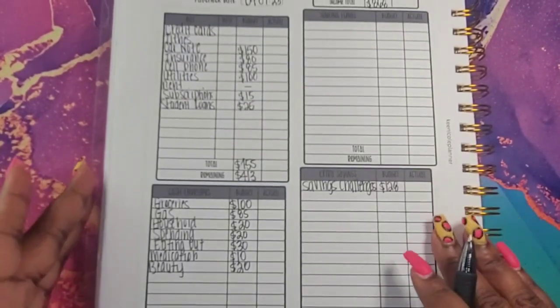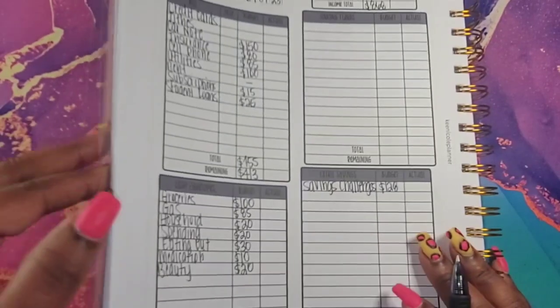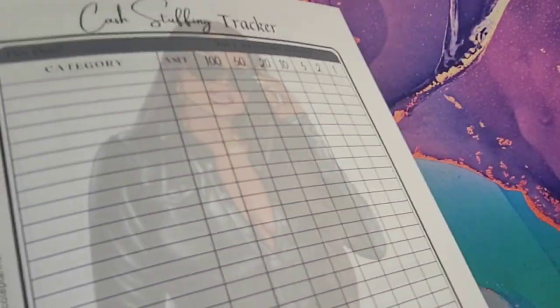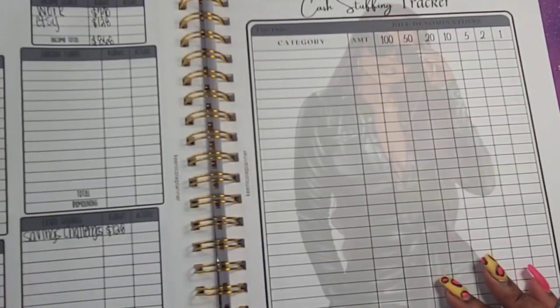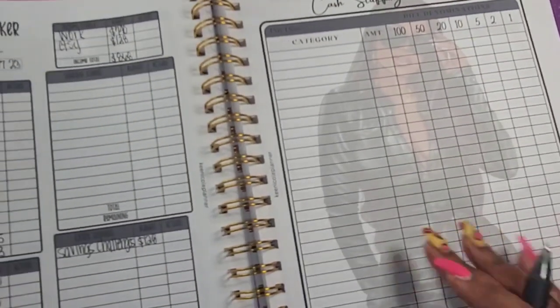So the next thing that I will do is I will go to my cash stuffing tracker, which is the next page. And I will get everything written in and I will be right back.